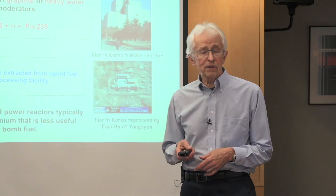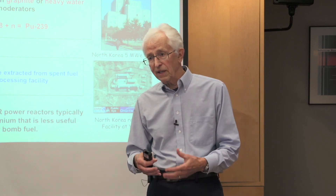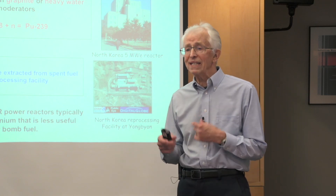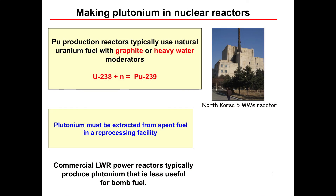If you want to make plutonium, you also start with natural uranium. You have to get the fission process going by some mechanism, and then the predominant uranium isotope — uranium-238 — if it picks up a neutron, which it easily does, then through a number of nuclear decays it actually becomes plutonium-239. So you have to make plutonium in a reactor; you don't just pick it up from Mother Nature.